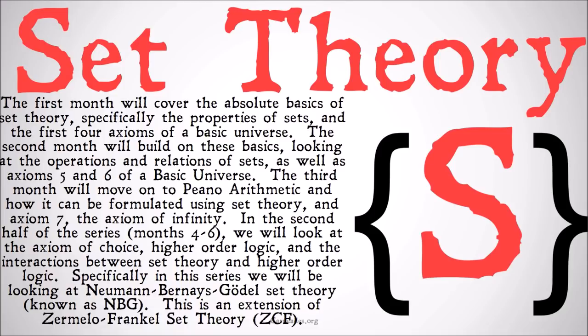In the second half of the series — months four through six — we're going to look at the axiom of choice, higher order logic, and the interactions between set theory and higher order logic. But I don't want to nail those down right now, just in case by the time we get through three months, people are requesting different things or requesting we go in a different direction. Specifically, in this series we're going to be looking at Von Neumann-Bernays-Gödel set theory, known as NBG, which is an extension of Zermelo-Frankel set theory.